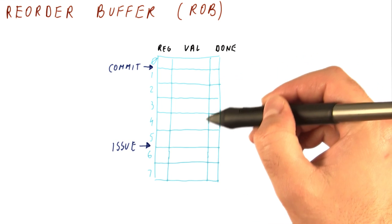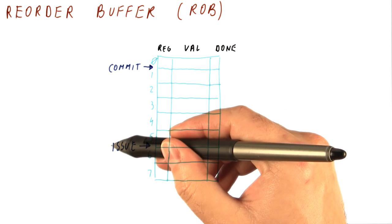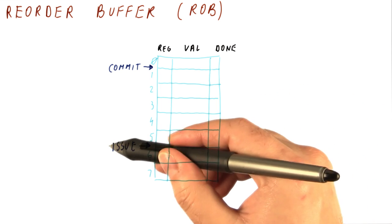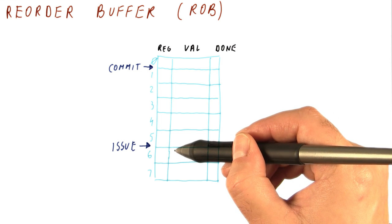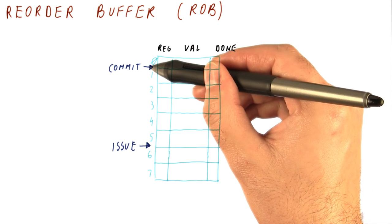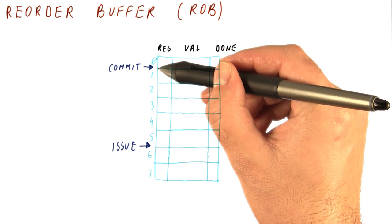And we keep instructions in the reorder buffer in program order. So we need two pointers. One pointer tells us when we issue the next instruction, where does it go? Another one tells us when we finally complete in program order the next instruction, which instruction is it going to be?